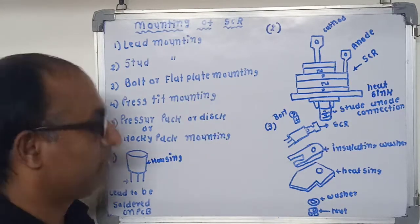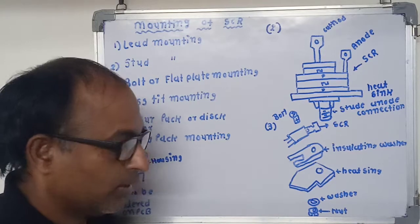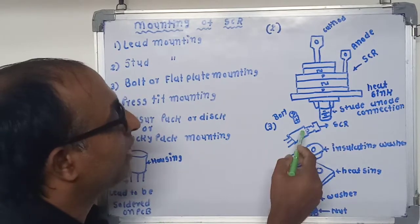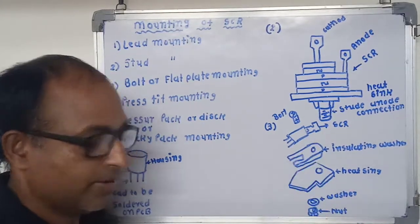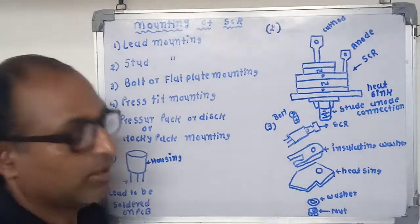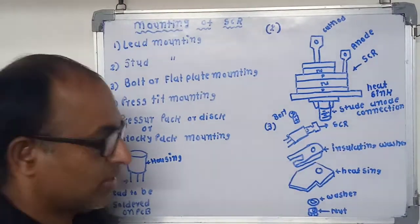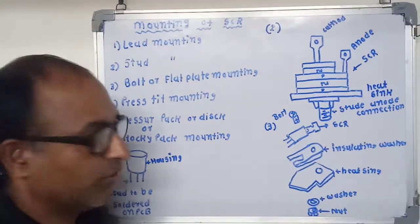Bolt or flat plate mounting. Aluminum or copper plates are used as a heat sink. Flat type SCR package is used and metal tabs are placed on it. The metal plate contains tabs with one or more than one holes.